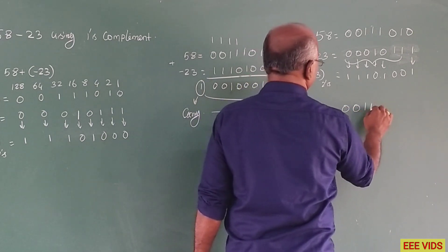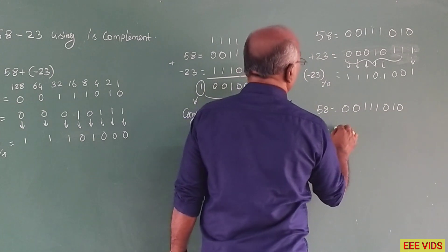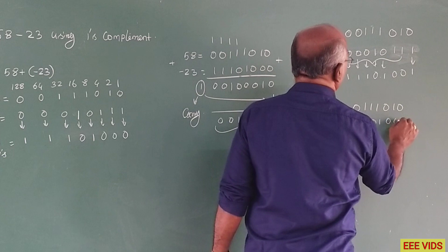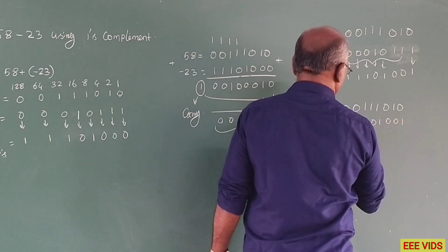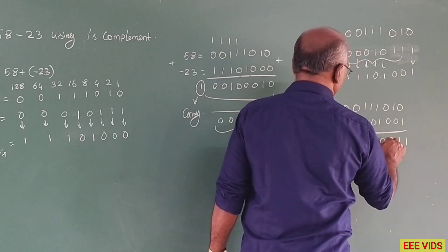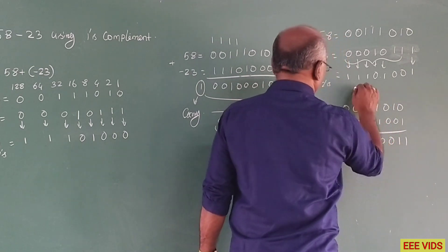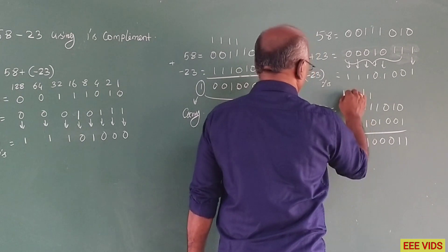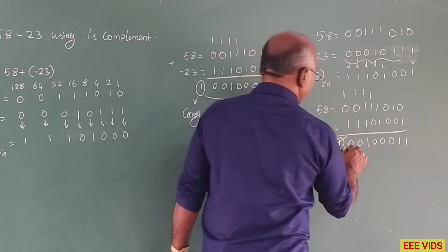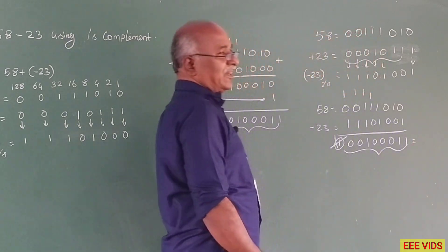For minus 23 using the two's complement method, add 1: 0, 1, 0, 0, 1. So the two's complement is: 1, 1, 1, 0, 1, 0, 0, 1. Now I will add plus 58 and minus 23 (two's complement). 1 plus 1 is 0, 1 plus 1 is 0, carry. The result is obtained.